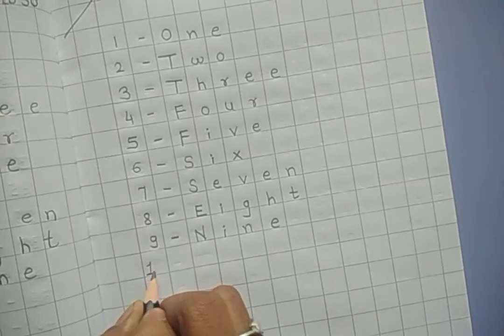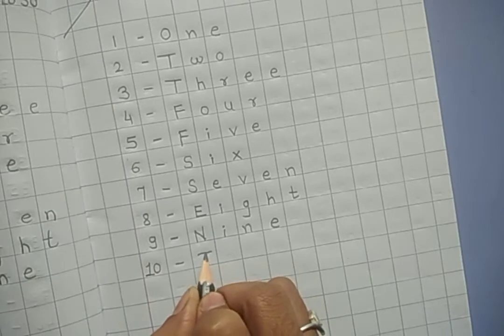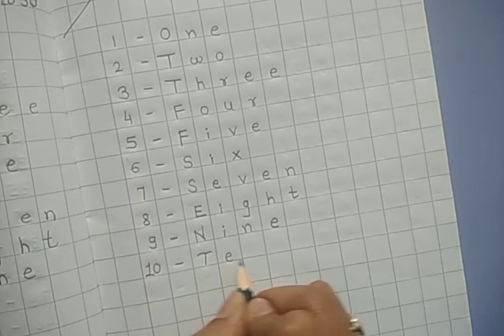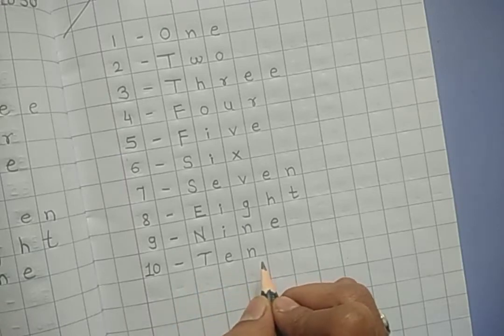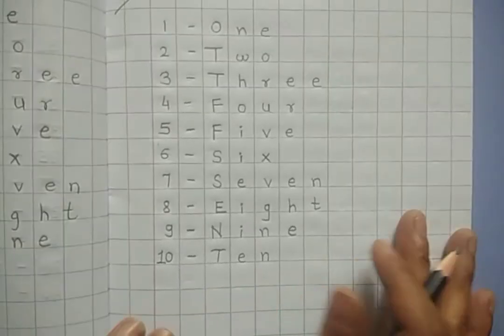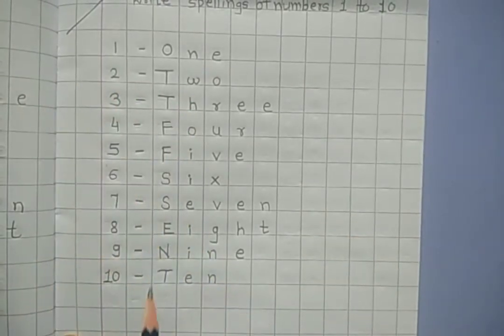Number 10, capital T, small E, small N, T-E-N, ten. Okay students, these are the spellings from 1 to 10.